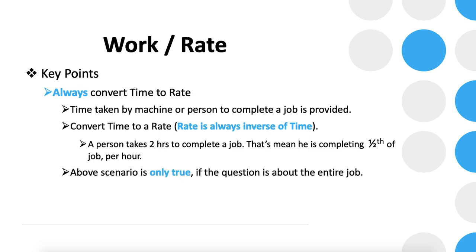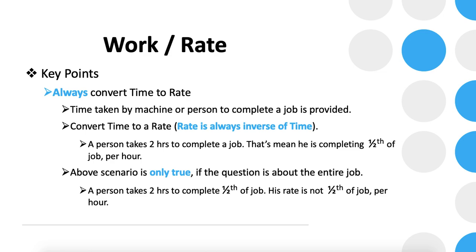This does not hold true if we are not provided with the entire job. For example, if a person takes two hours to complete half of the job, the rate will not be the reciprocal of the time. In that scenario, we need to use the formula which we will discuss further.